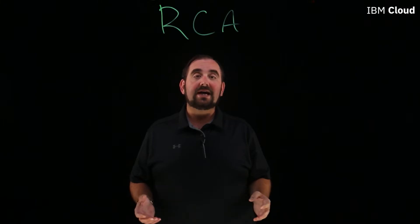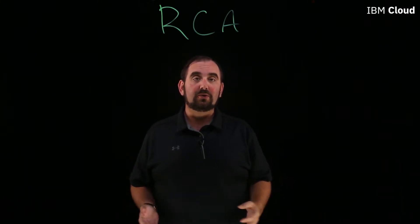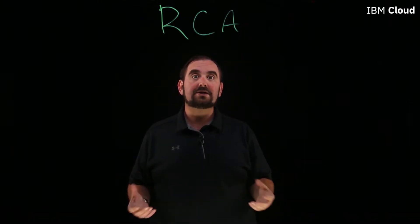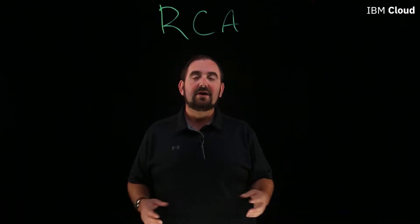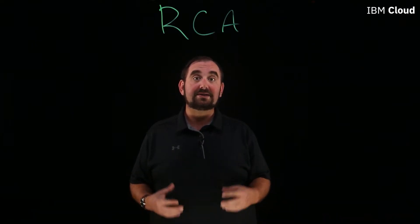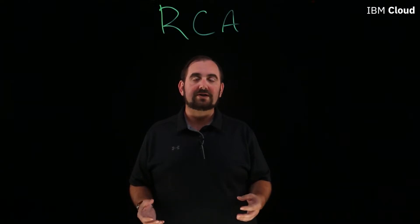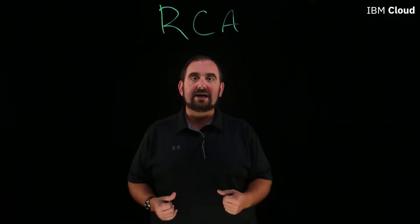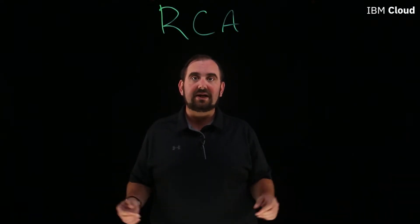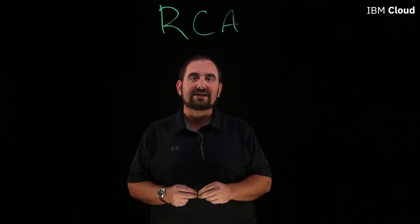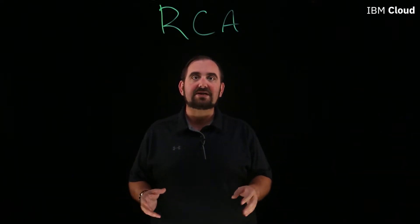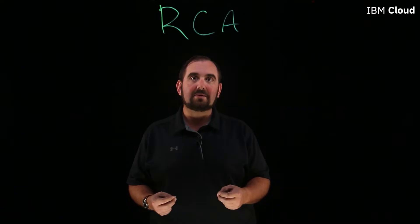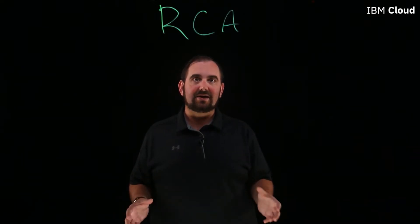An RCA is a standard process that you should go through any time within the technology industry that you have what I like to call a customer impacting event — a serious event where something has gone wrong and resulted in serious problems for your customers. It could be a downtime outage, a loss of network and connectivity, or a loss of electricity. This RCA process, which is seven steps, is designed to help you not only identify what the problem is, but how to fix it so that it doesn't ever happen again.